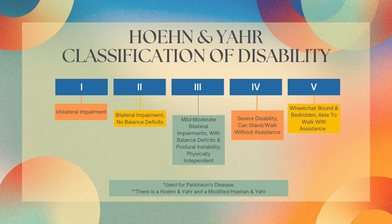Next we have the Hoehn and Yahr classification of disability. This is used for Parkinson's disease. There is a classic Hoehn and Yahr and a modified Hoehn and Yahr — the one I'm using here is the classic. You're welcome to look up both scales side by side on Physiopedia, which is useful. For the NPTE, you can never be too safe knowing both.